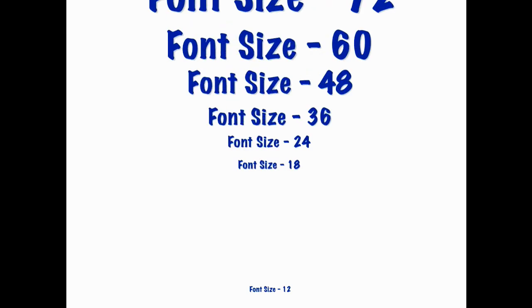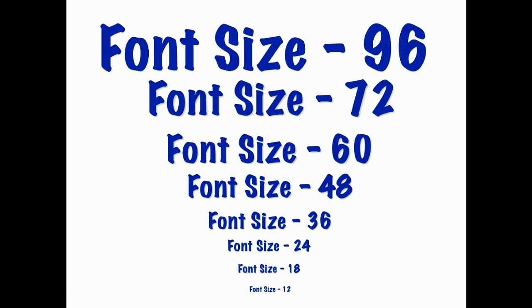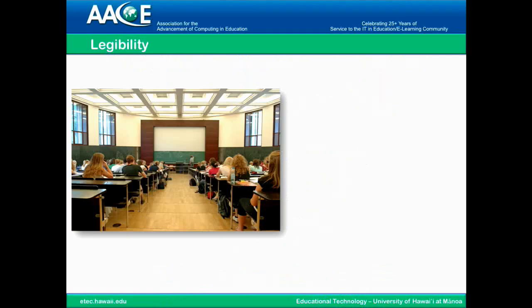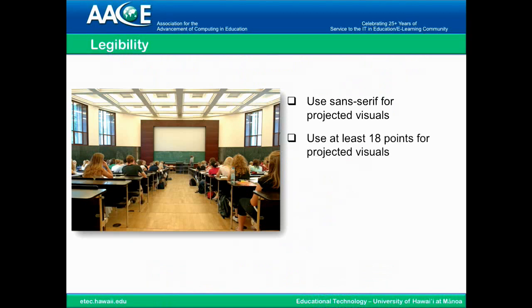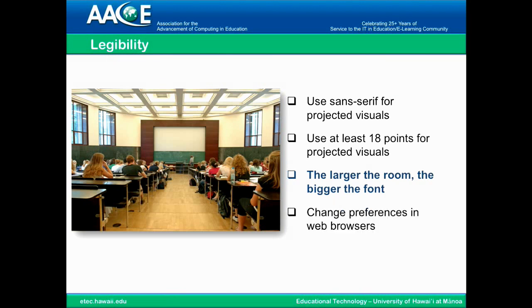The font size at the bottom of this slide is 12 points — this is the same size as your paper, and not the appropriate size for a presentation; it's very hard for the audience to see. You need to use the largest font size you can while still having a pleasant design. I wouldn't put anything below font size 18, and that's for your smaller room. Use sans serif for projected visuals at least 18 points. The larger the room, the bigger the font. Also, when you're using a web browser for a presentation, you need to change your preferences, because it's normally at about 12 points and that cannot be seen by the audience.